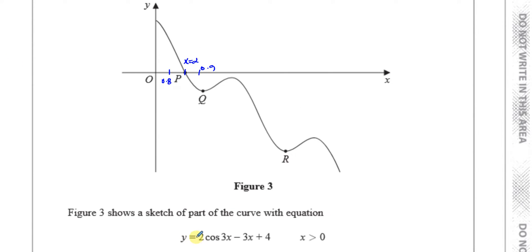Well, I know that y equals 2 cosine 3x minus 3x plus 4. And I know that this hits the x-axis when y equals 0, because the x-axis is the line y equals 0. So when y equals 0, this is going to cross the x-axis.